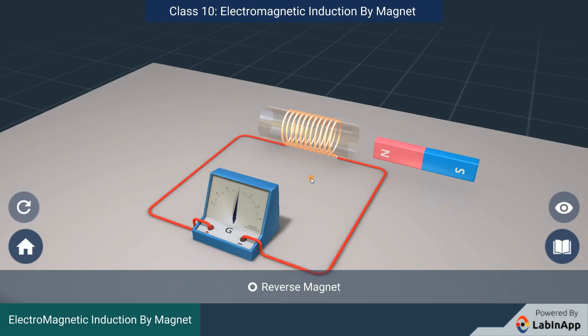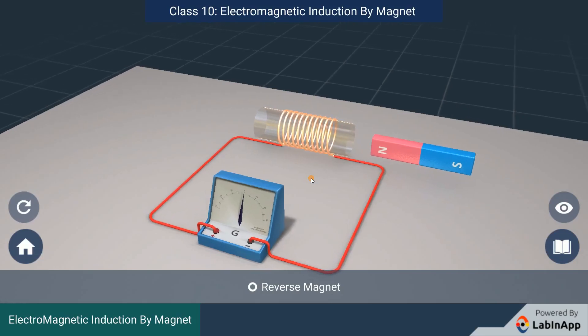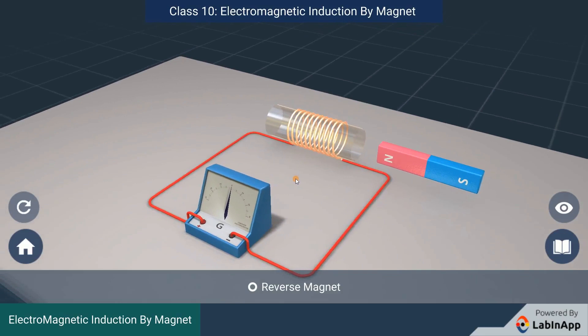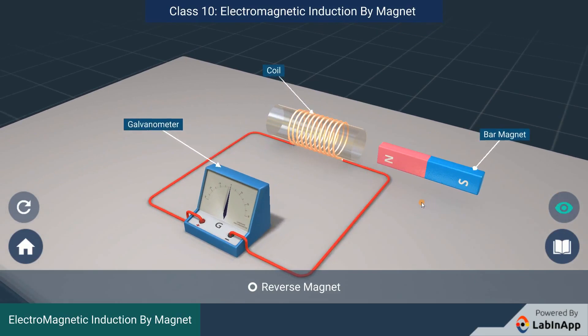Let us study electromagnetic induction by changing the magnetic field around a conductor. We have taken a bar magnet, a coil and a galvanometer.